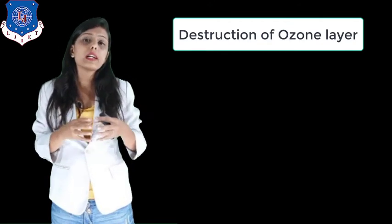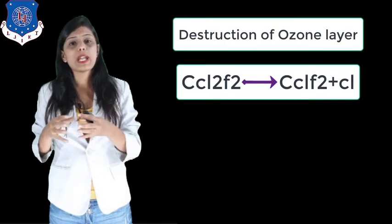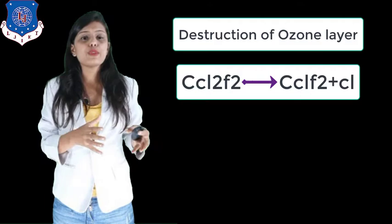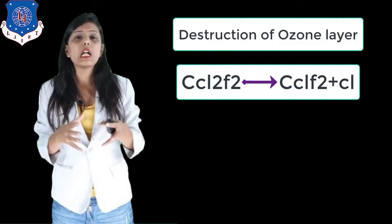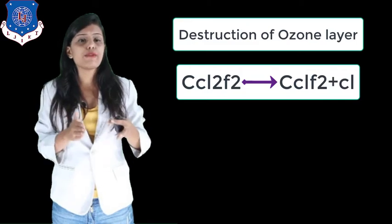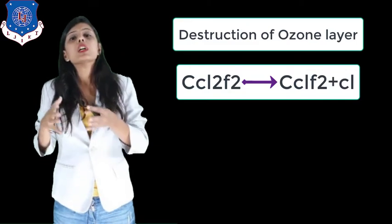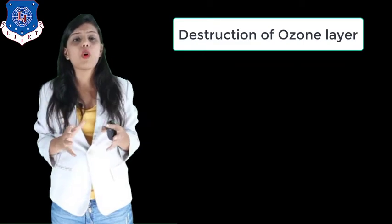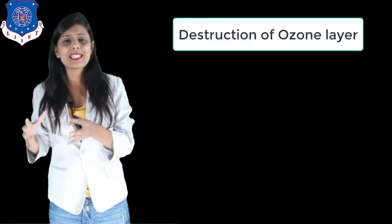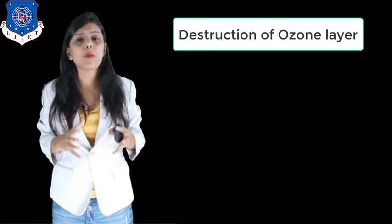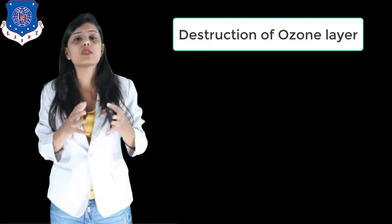There is also another form of CFC known as CFC-12. CCl2F2 reacts with ultraviolet rays and produces CClF2 plus Cl. The chlorine atom breaks away from the CFC molecule and this chlorine atom hits the ozone molecule and destroys it.